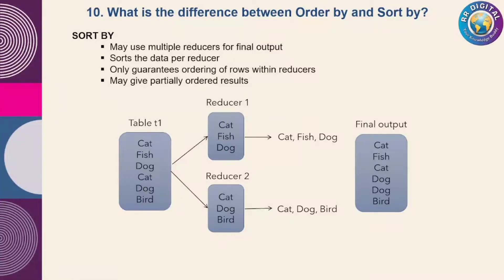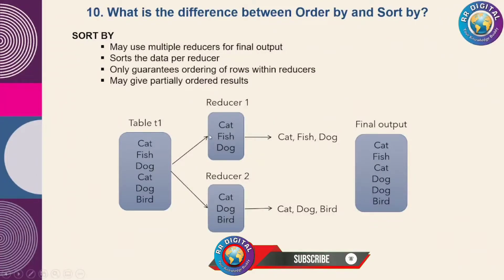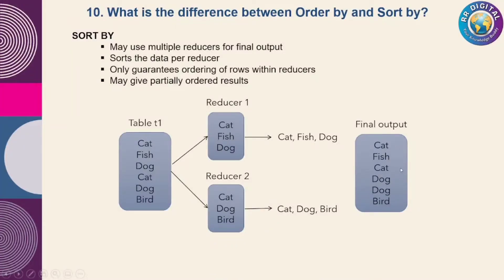With SORT BY, the data goes to two reducers — reducer one and reducer two. Each reducer applies sorting only on its own related data separately. The reducers do not combine all data together. So the final output will not be in a globally sorted order — you might get a partial result like C, A, T, C, F, C, D, B instead of the correct ascending order B, C, D, F.